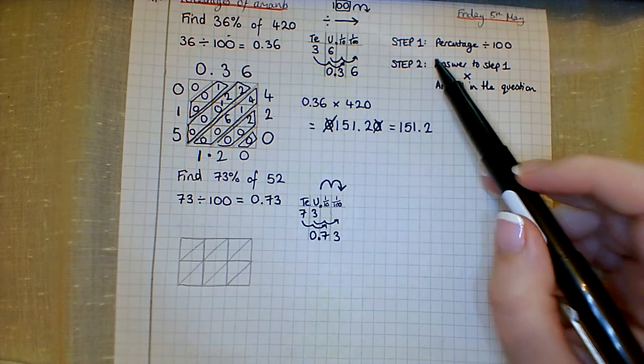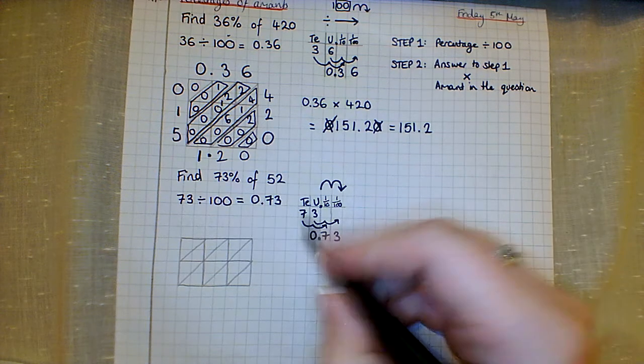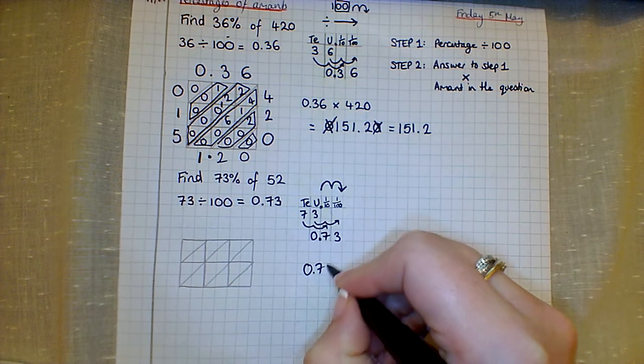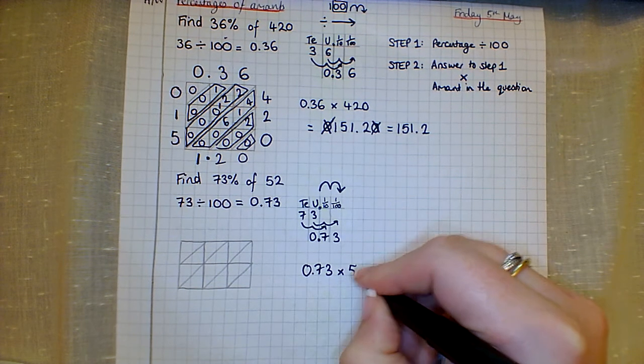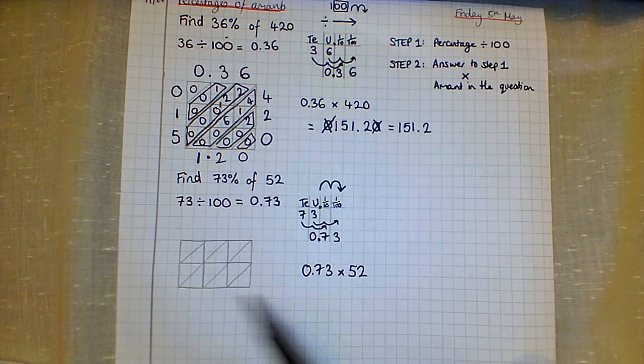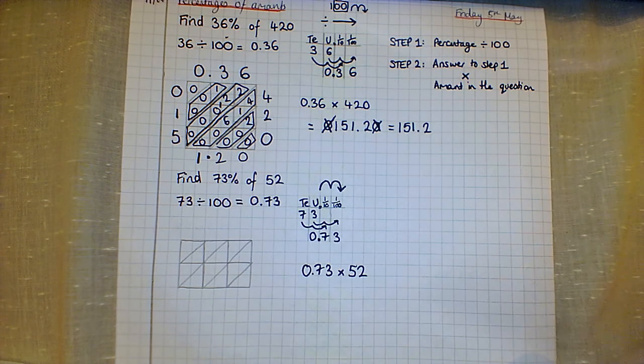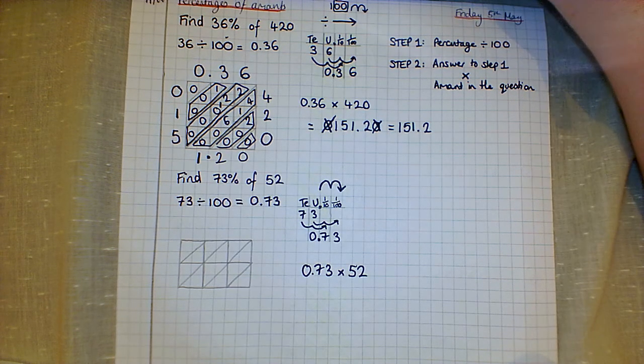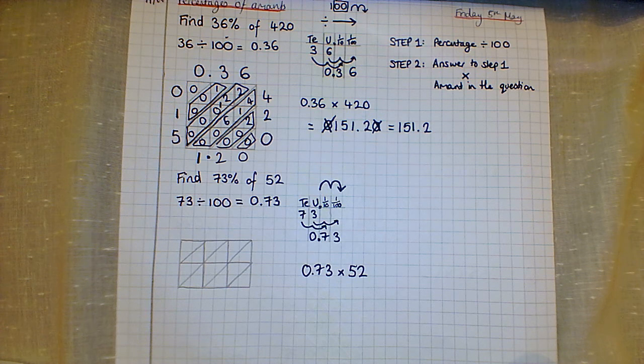Now you're going to try step number two. So the answer to step one, which is 0.73, times by the amount in the question. This is what your grid should look like. Remember which one you're going to put on the top. Have a go and then check your answers. Pause it now, have a go, and then see if you get the same as me.